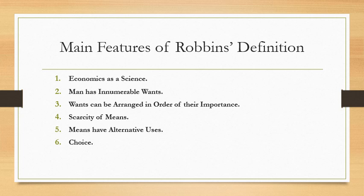Second, man has innumerable wants. By ends, it means human wants. These human wants are various and unlimited. When one want is satisfied, another want arises. When that too is satisfied, the next one immediately appears. There is thus a chain of wants, one after the other.